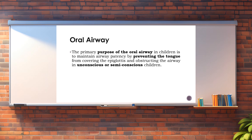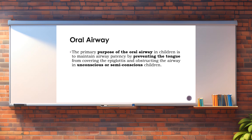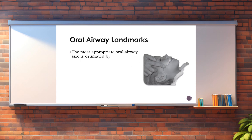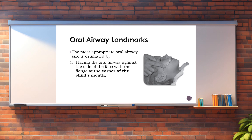The oral airway. The primary purpose of the oral airway in children is to maintain airway patency by preventing the tongue from covering the epiglottis and obstructing the airway in unconscious or semi-conscious children. The most appropriate oral airway size is estimated by placing the oral airway against the side of the face with the flange at the corner of the child's mouth. The tip of the oral airway should reach the angle of the mandible.